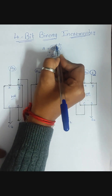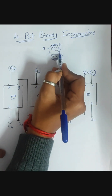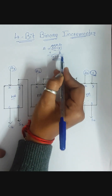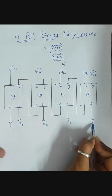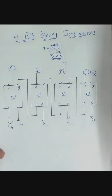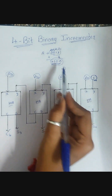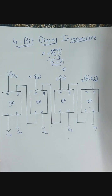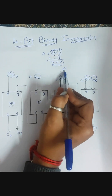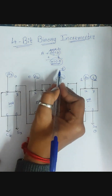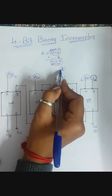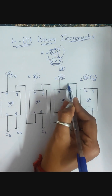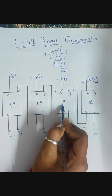So A0 plus one gives the output S0. For example, if A0 is one, then one plus one gives 10 in binary, so zero is my S0 and this one is my carry. This carry should be forwarded to the next higher order input, so this carry is again given as the second input of the next half adder.